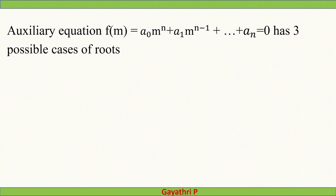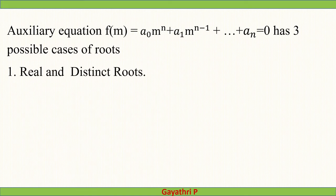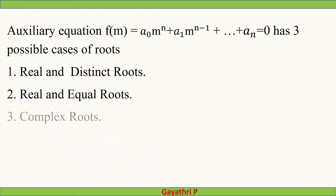The auxiliary equation f(m) = a0 m^n + a1 m^(n-1) + ... + an = 0 has three possible cases of roots. First: real and distinct roots. Second: real and equal roots. Third: complex roots.